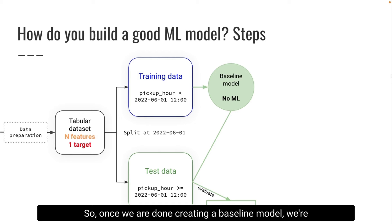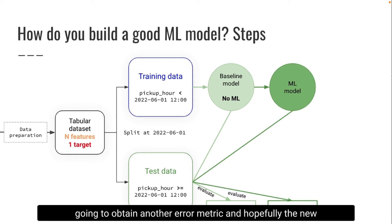So once we're done creating a baseline model, we're going to start using machine learning to build the model, and we're going to build our first model. And again, once we are done building it, or also called training it, we're going to evaluate it and we're going to obtain another error metric. And hopefully the new error that we got on the test data is going to be smaller. If that's the case, it means we've built a better model.